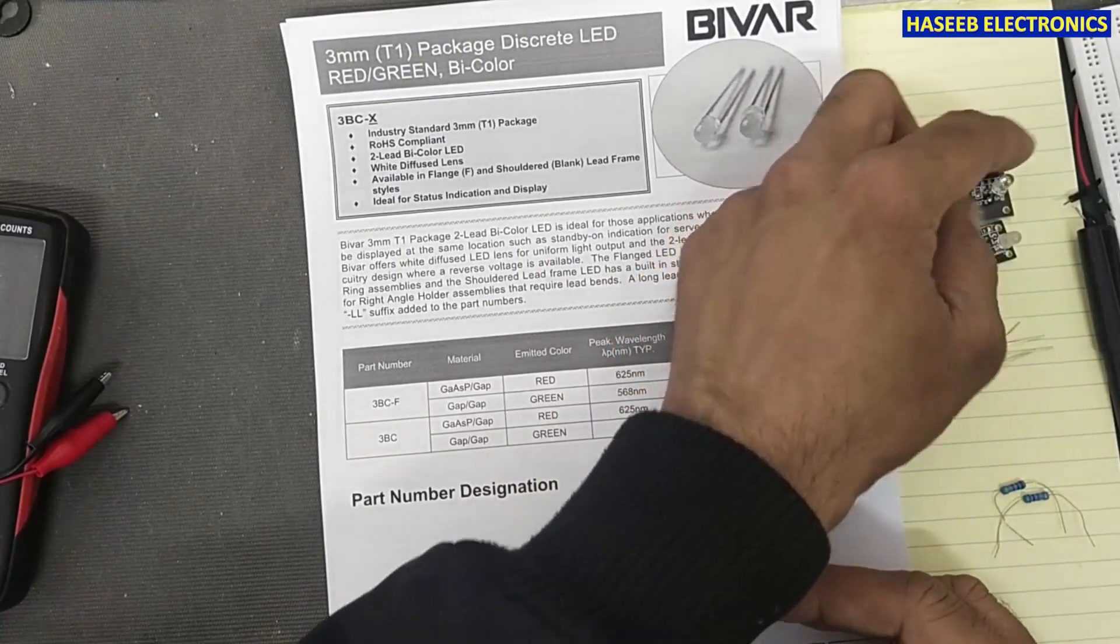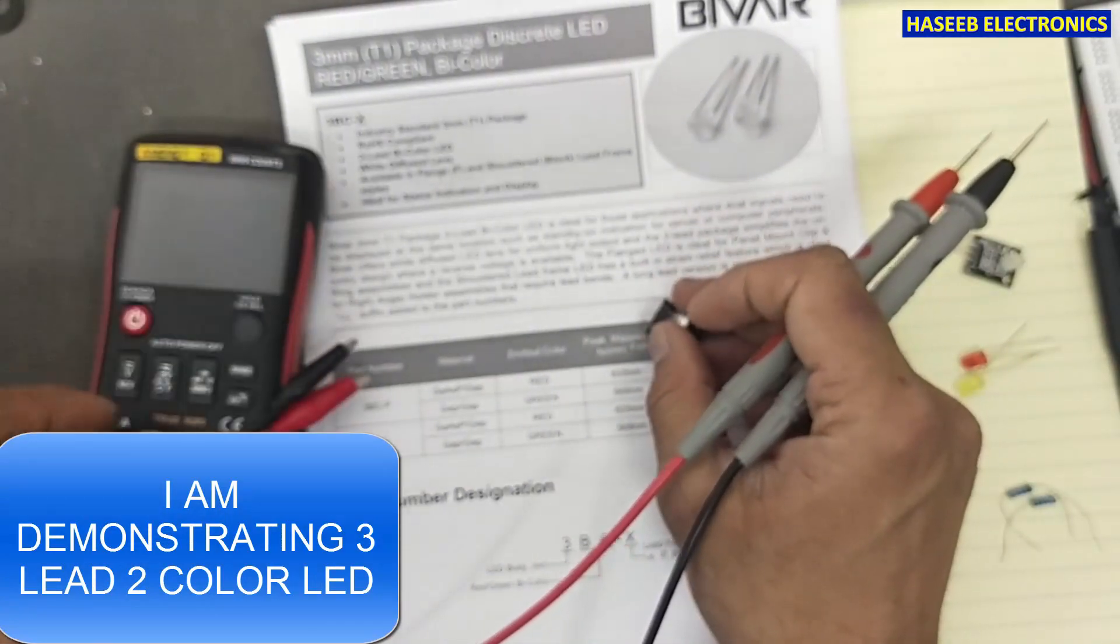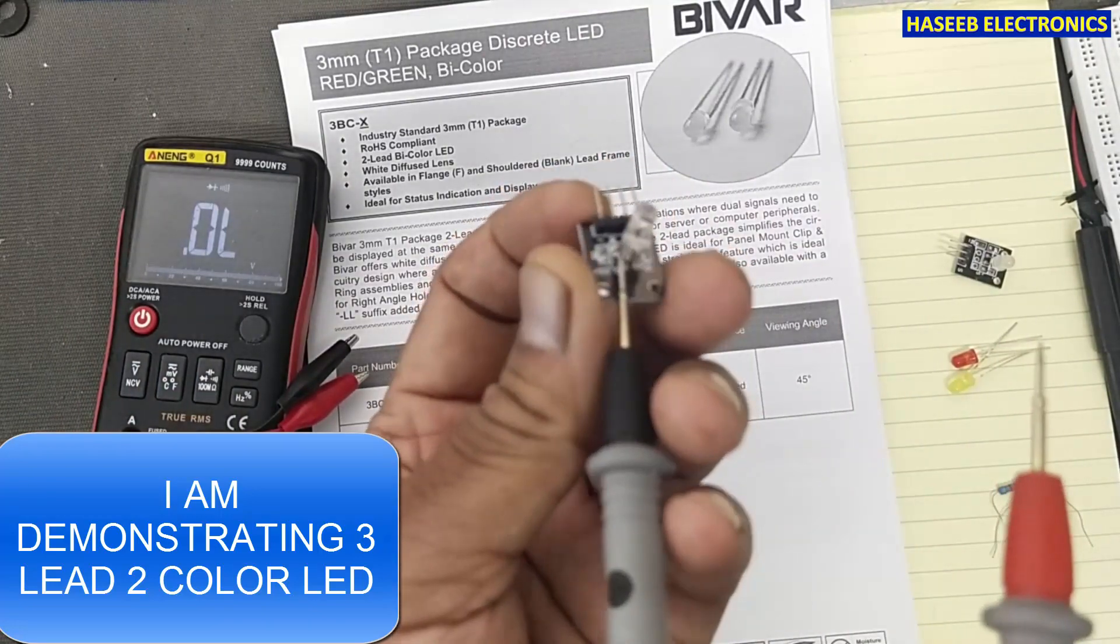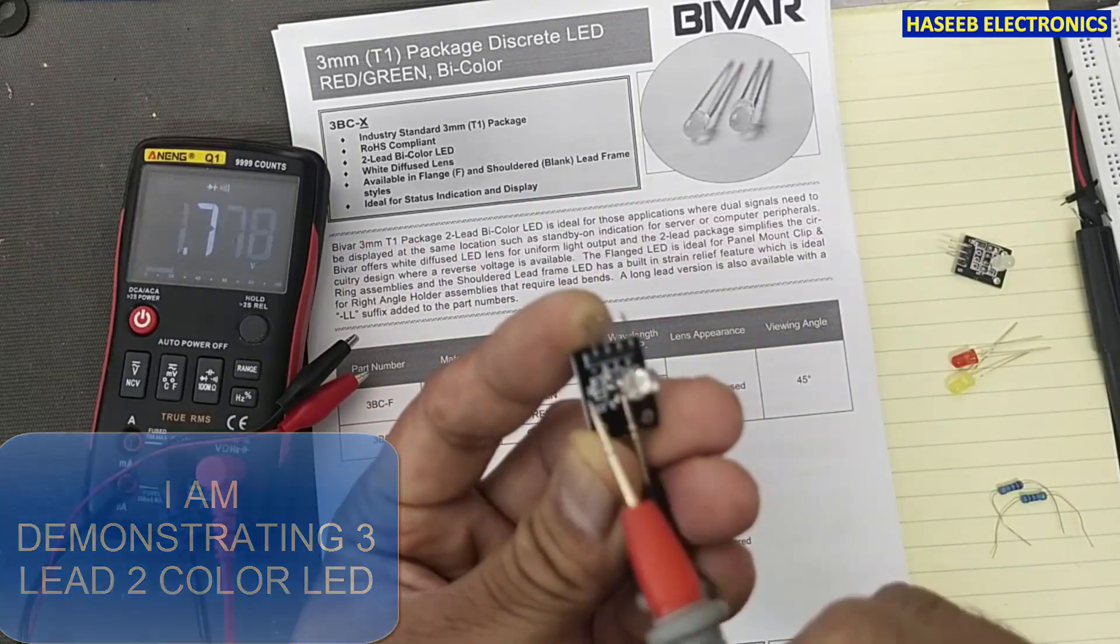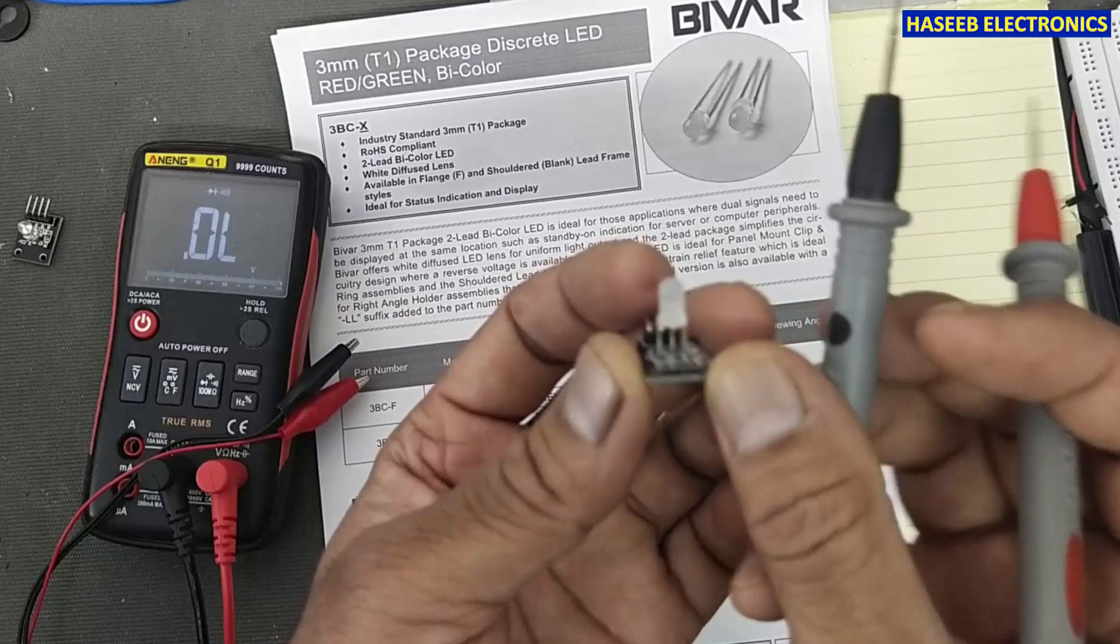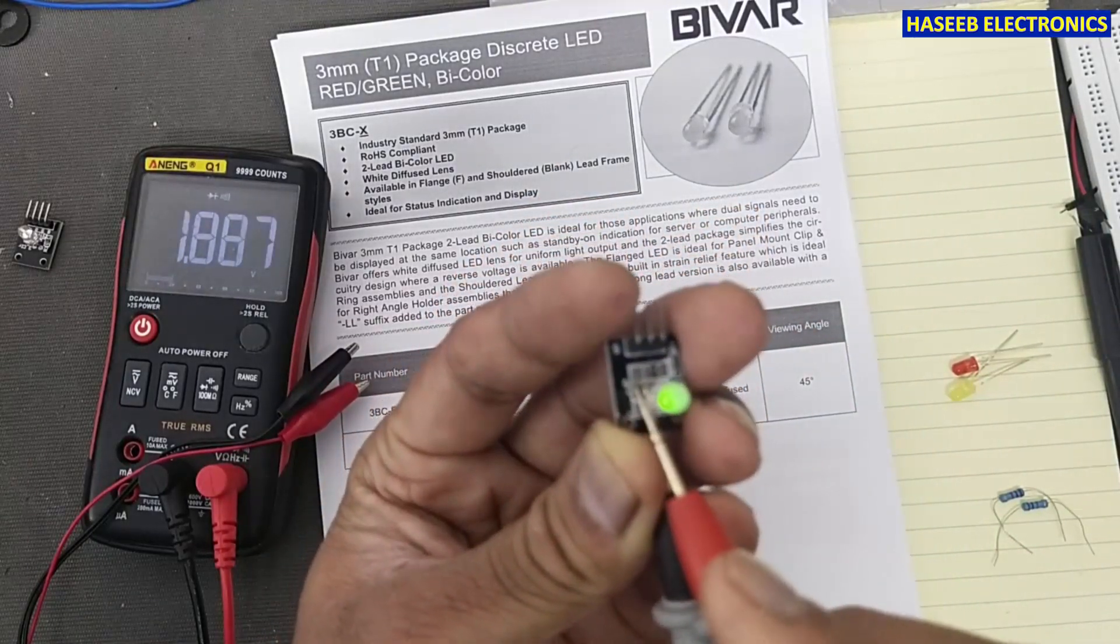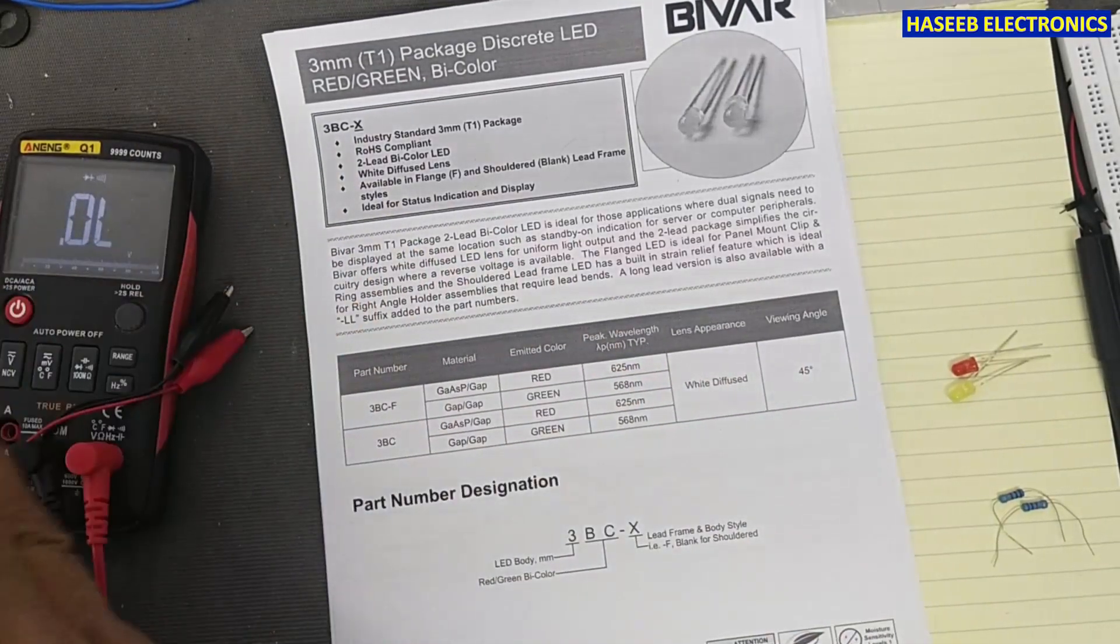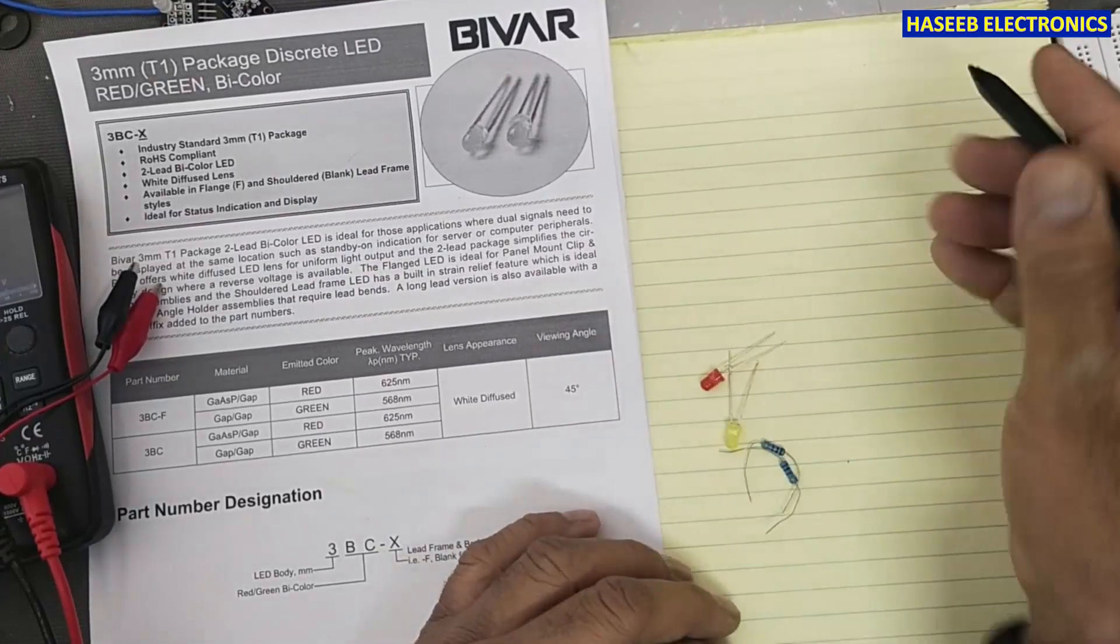If we check this LED in diode mode, I will connect the black lead to the center pin. Blue light, red light, so it has two-color LED. If you check this one, this is also a three-pin LED, red-green. The difference between two-pin LED and three-pin LED is that three-pin LEDs are working in this way.